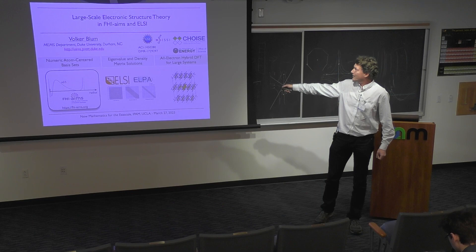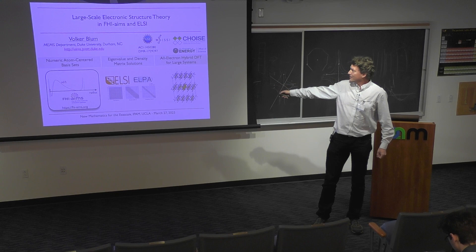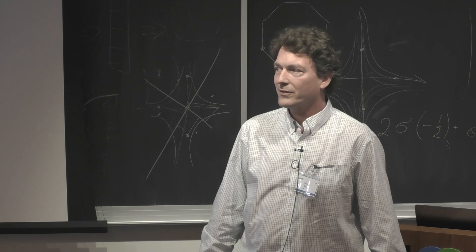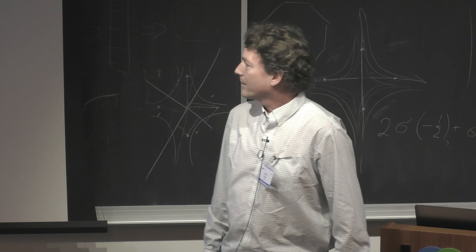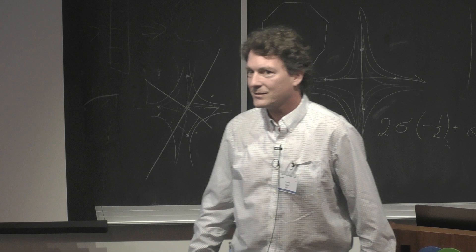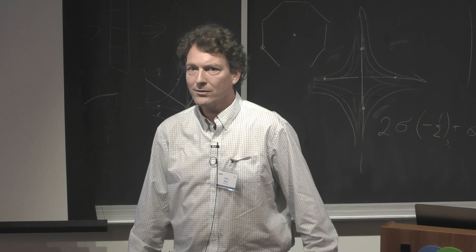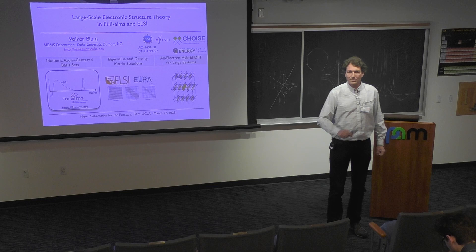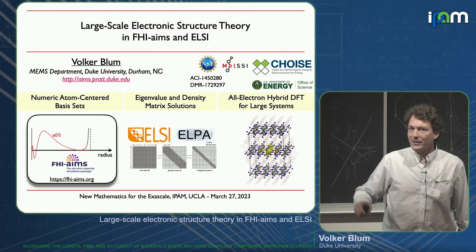The topic of this talk is large-scale electronic structure theory in FHI-aims and ELSI. FHI-aims is a general purpose electronic structure code that can do many things, but one direction we've been pushing is to do large calculations on very large supercomputers efficiently and precisely. It's based on numeric atom-centered basis sets, which enables all-electron calculations at reasonable cost. Eigenvalue and density matrix solutions are another topic, involving an open source framework bridging to different eigenvalue and density matrix solvers in the community.